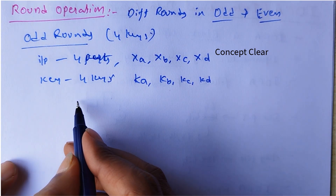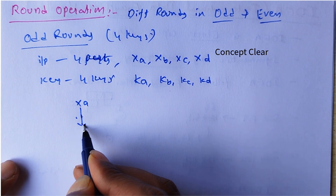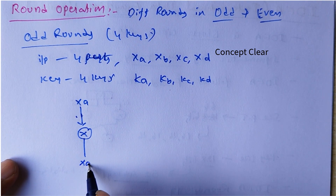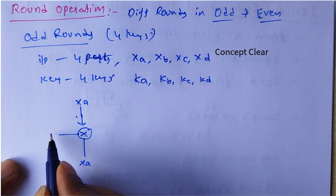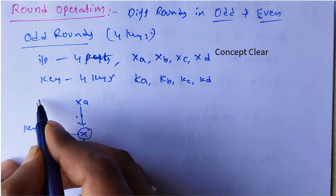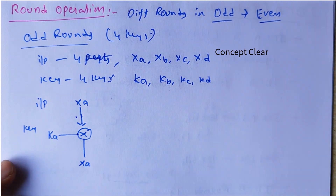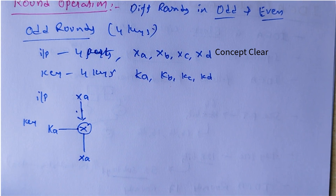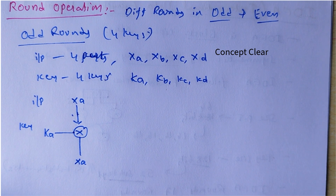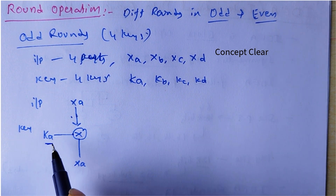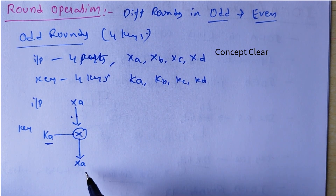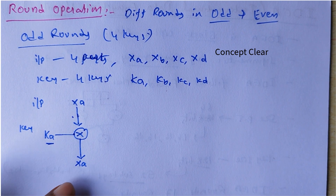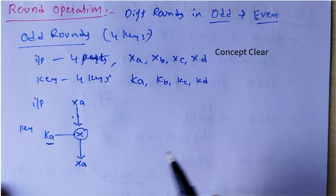In the odd round operation: XA performs a special multiplication operation with key KA and produces output XA. After the plain text is converted into ciphertext, that XA is the input to the next round.